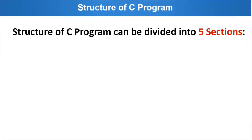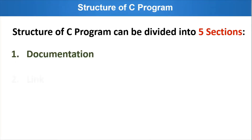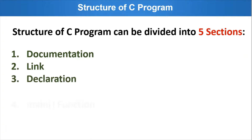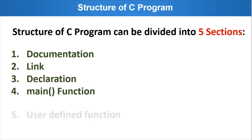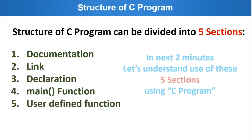The structure of a C program can be divided into five sections: Documentation, Link, Declaration, Main Function, and User Defined Function.